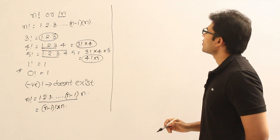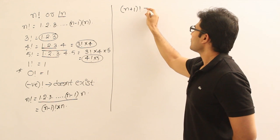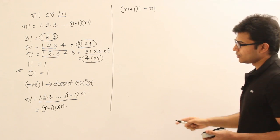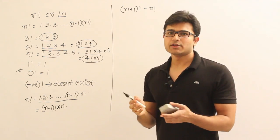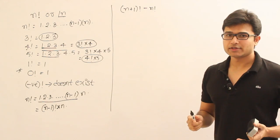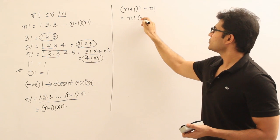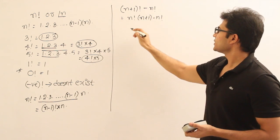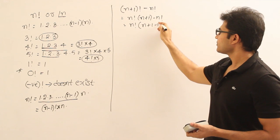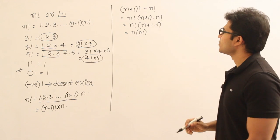Let us say you want to find (n+1) factorial minus n factorial. Knowing this will be useful whenever you want to combine terms, perform addition or subtraction — we will frequently encounter such situations in permutations and combinations. It is nothing but n factorial × (n+1) minus n factorial. If you pull out n factorial as common, it is n factorial × (n+1−1), which is n × n factorial.